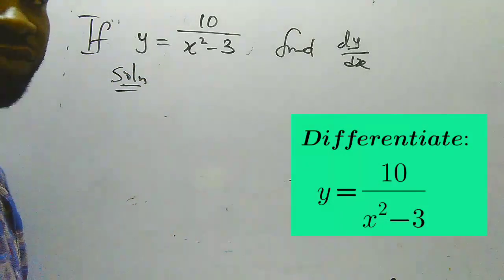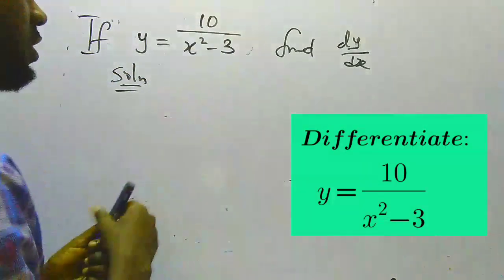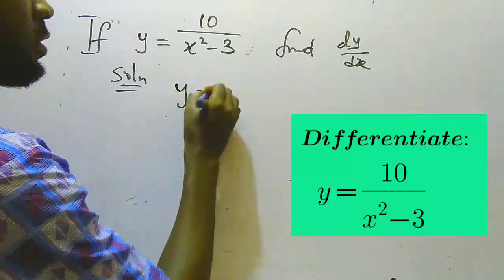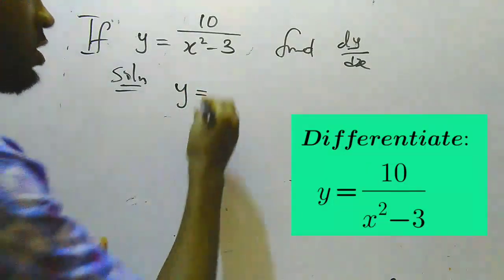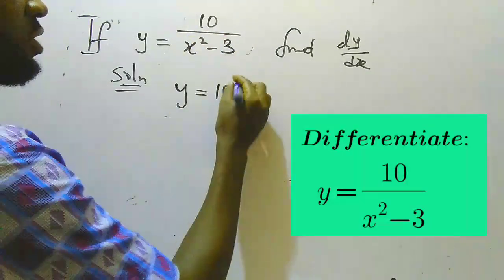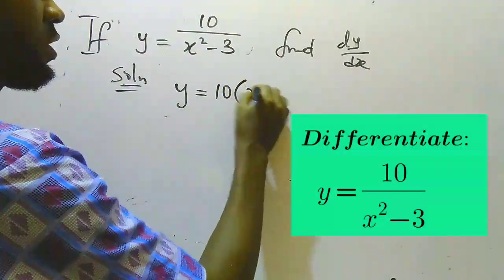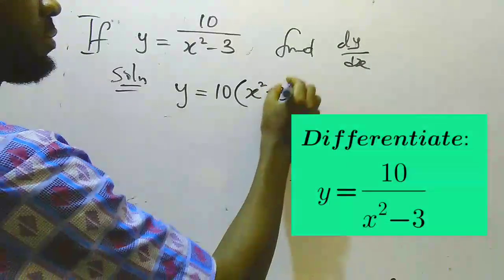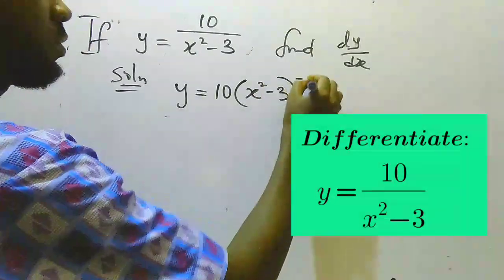Now the first thing I'm going to do is put this in power form. So this is where your knowledge of indices becomes handy. Now this denominator, I can put it in this form with the power of minus 1.